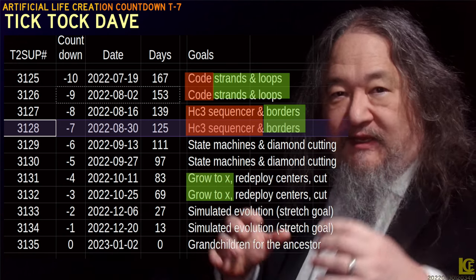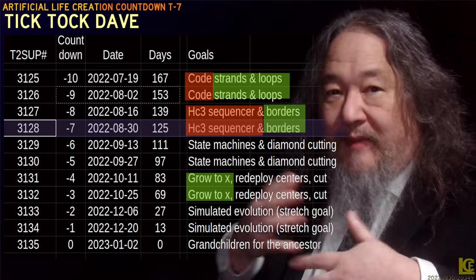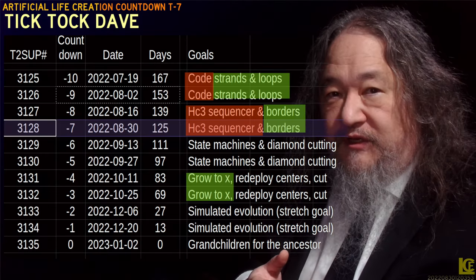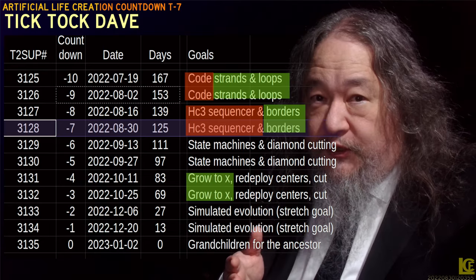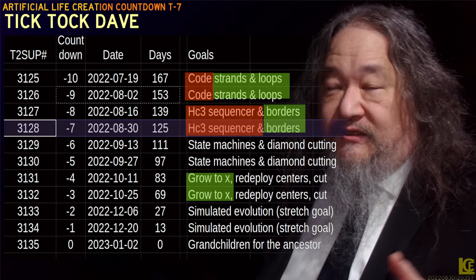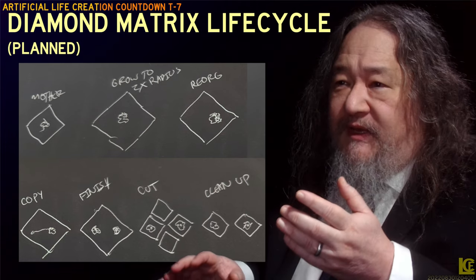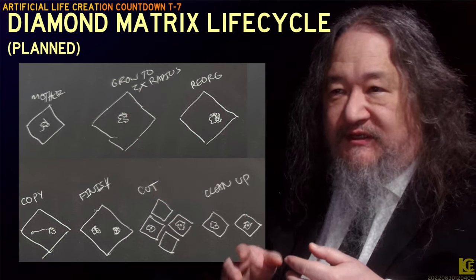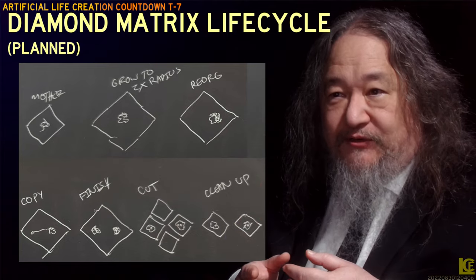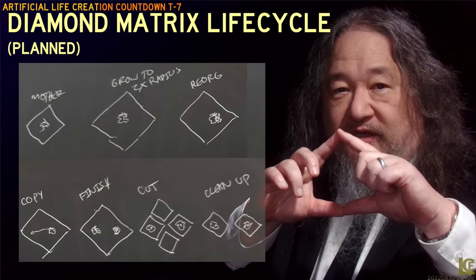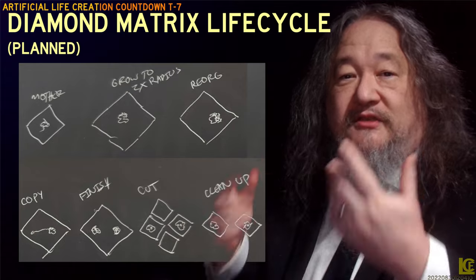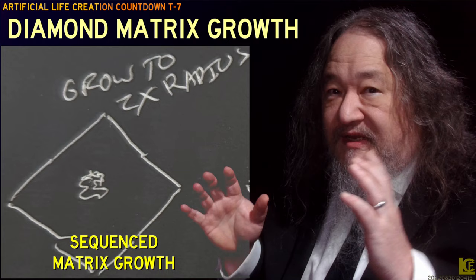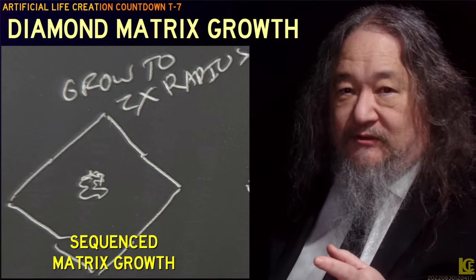On the other hand, 'grow to X' — having a diamond that can expand on a programmatic basis — was really scheduled for T-4 or T-3, and we already have a really pretty good cut at it. Growing to two times radius is the very first step in the planned diamond matrix life cycle that begins with a single mother and ends with two daughters, and the cycle can repeat. So sequenced matrix growth is something that we didn't have before and absolutely need.